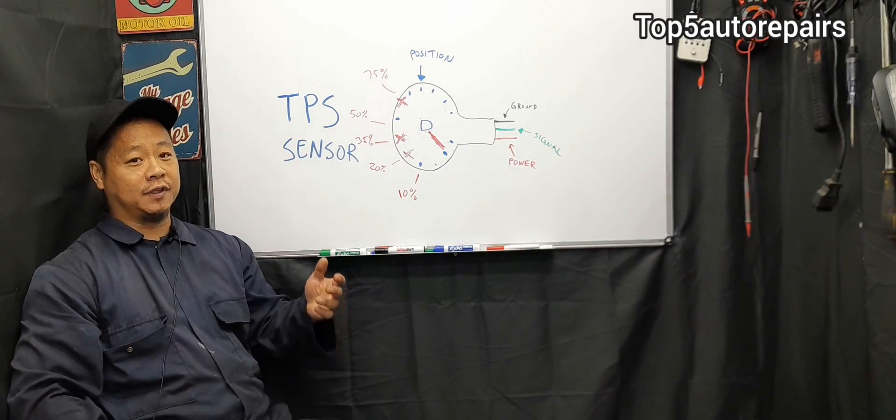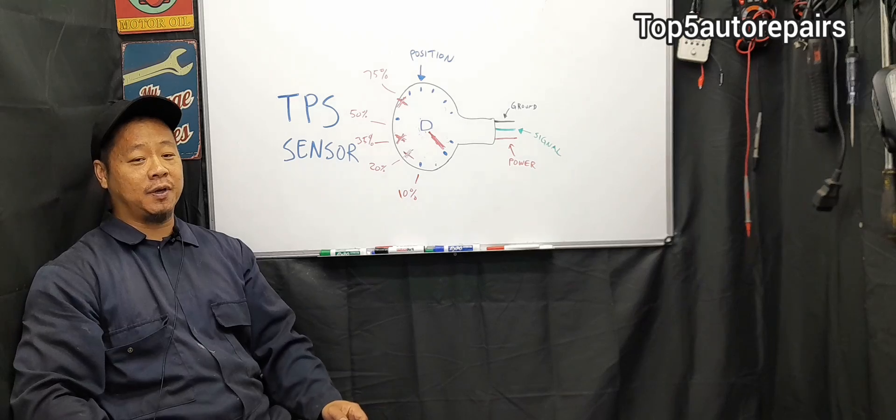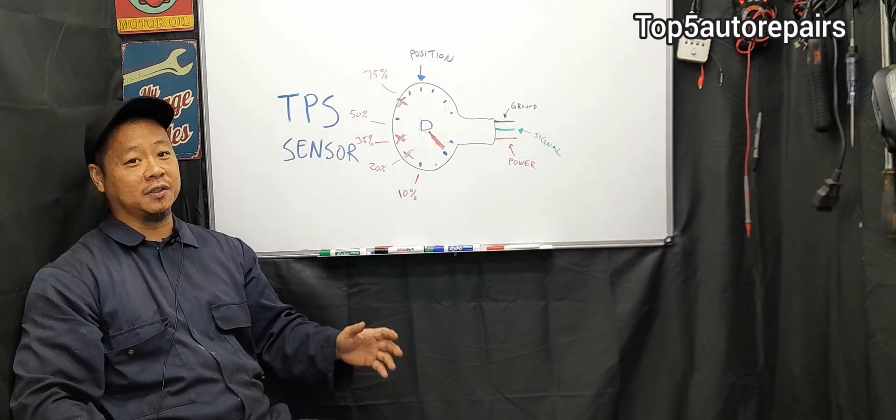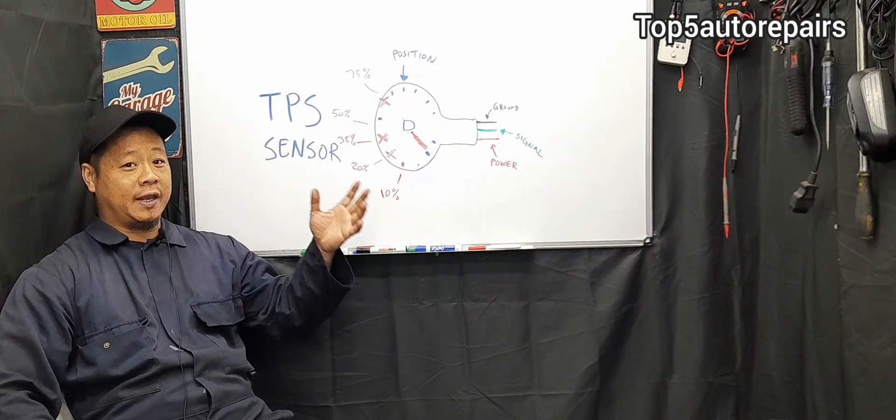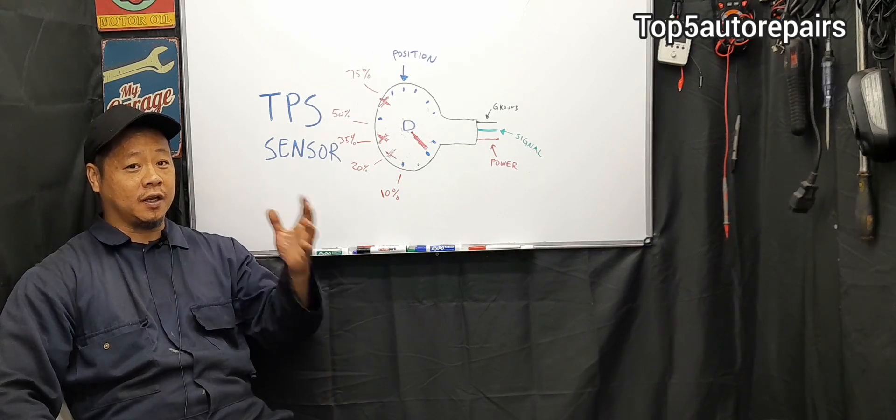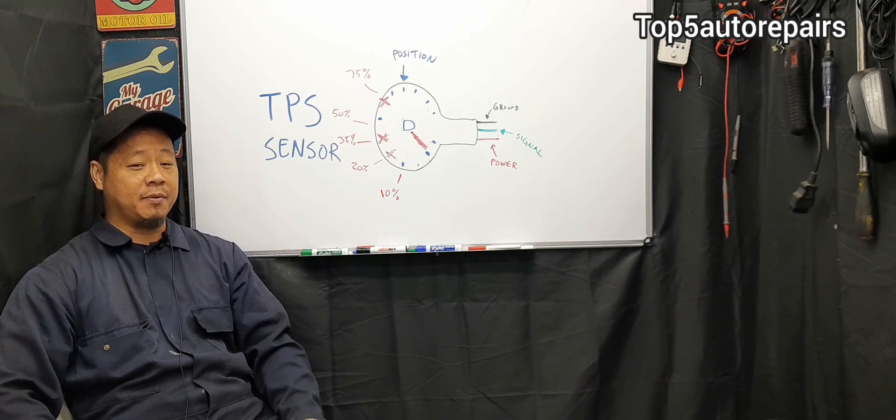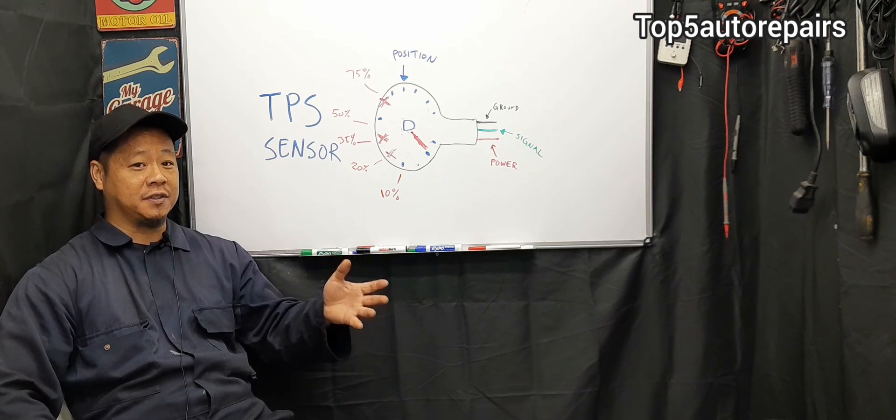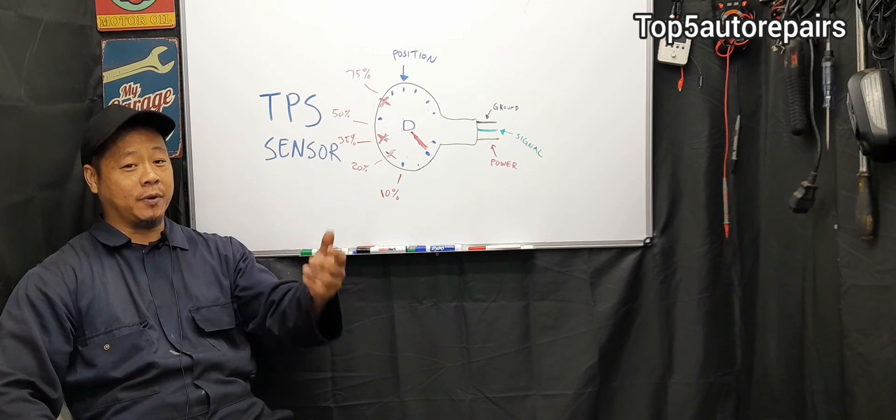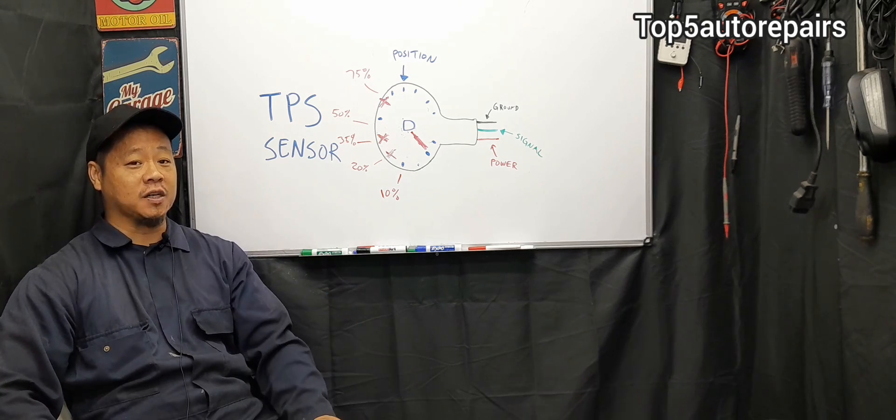You're going to have the engine surging when you step on the gas pedal. You're going to have hesitation during acceleration. You're going to have overall acceleration issues. And if the computer cannot get a reliable signal coming from the TPS sensor, the computer can set the vehicle into limp mode, basically a safety feature that limits the vehicle speed to around second gear, or maybe no faster than 35 to 50 miles per hour.